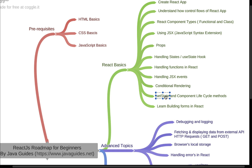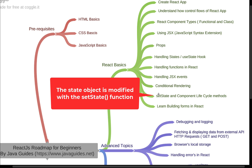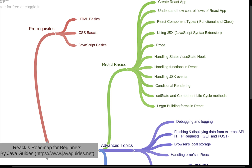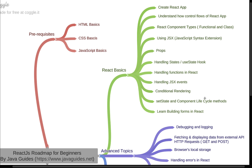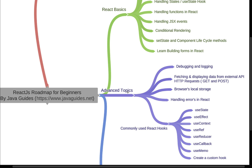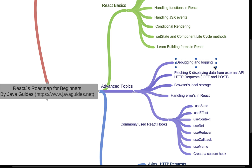setState is a method used to set a value in the state object; whenever you want to modify the state in a class component, use setState. Next, learn how to build forms in React — how to create and submit forms, handle form elements like onChange and onSubmit, and populate data in the form for editing. Also learn debugging and logging — you should know how to debug and log statements in a React application.